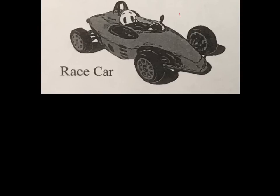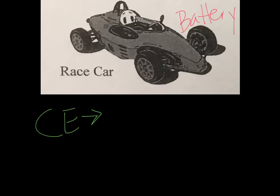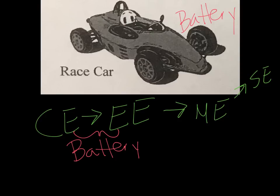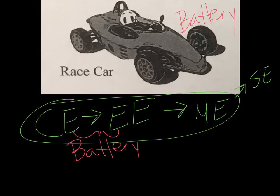Now let's look at a race car. We start with the battery — all batteries start with chemical energy. Once the chemical energy is there and we start it up, it transforms into electrical energy. Remember, all batteries go through these same first two steps: chemical to electrical. Now that we have electrical energy, we want the car to move, so we get mechanical energy. And because of the wheels turning and all that, the mechanical energy can also turn into sound energy.